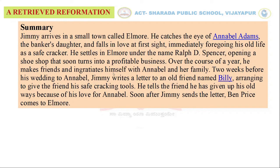Over the course of a year, he makes friends and ingratiates himself with Annabelle and her family. Two weeks before his wedding to Annabelle, Jimmy writes a letter to an old friend named Billy, arranging to give the friend his safe-cracking tools. He tells the friend he has given up his old ways because of his love for Annabelle.